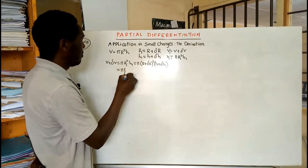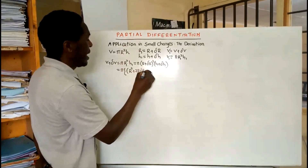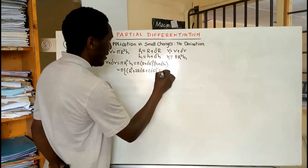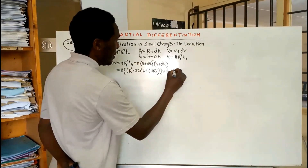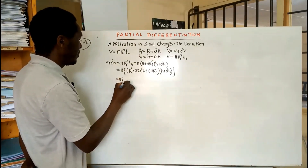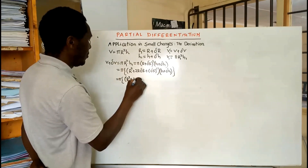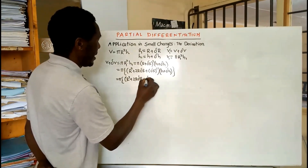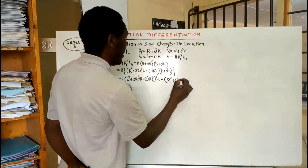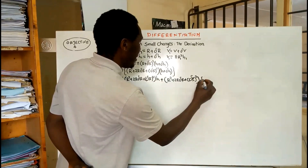Expanding r plus delta r squared using the binomial theorem gives r squared plus 2r delta r plus delta r squared. We then multiply that bracket by the bracket h plus delta h, distributing h across the first bracket to get r squared h plus 2r h delta r plus h delta r squared.